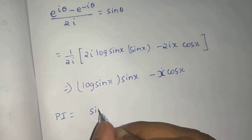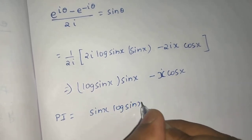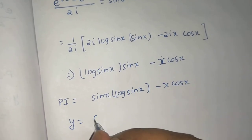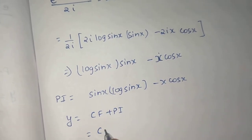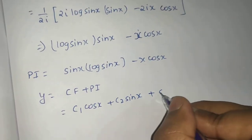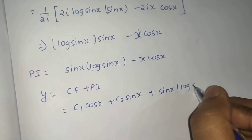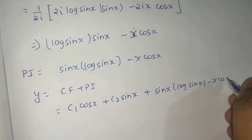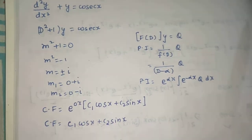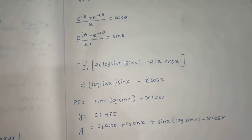So the particular integral is sin x · log(sin x) - x cos x. The final solution is CF + PI: y = c₁ cos x + c₂ sin x + sin x · log(sin x) - x cos x. This problem used the standard complementary function method plus the general PI formula, with some complex number manipulation making it a bit lengthy.